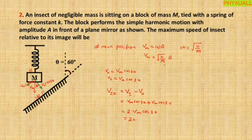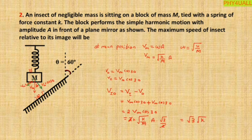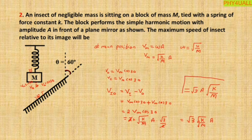Substitute the value. You will get 2 times Vm - that maximum we have already calculated - root of k by M times A times cos 30. What is the cos 30 value? Root 3 by 2. So 2 cancels, and you will get the final answer as root 3 times root of k by M times A. This is the relative velocity of image with respect to object. So this is the answer for this one. I hope it is understood. Thank you.